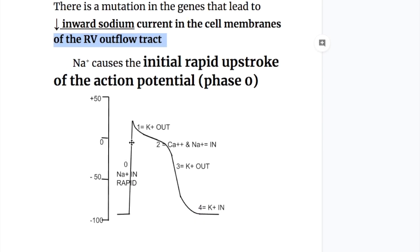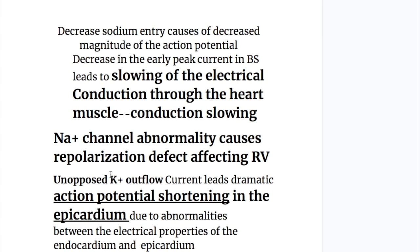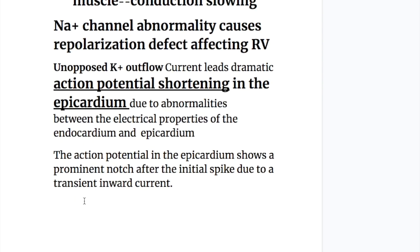A decrease in the early peak current in Brugada syndrome leads to slowing of electrical conduction through the heart muscle. This conduction slowing due to sodium channel abnormality causes a repolarization defect affecting the right ventricle. Unopposed potassium outflow current leads to dramatic action potential shortening in the epicardium.